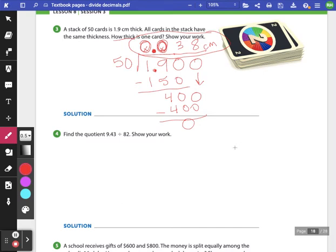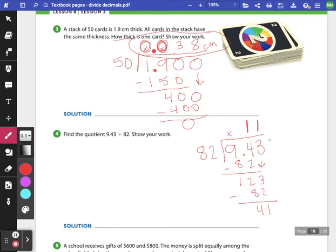Number 4, find the quotient of 9.43 divided by 82. I know that 82 cannot go into 9. It can go into 94 one time. So I would have 12 left over. Bring down my 3. I know that 82 can go into 123 only one time, which is 41 left. I can't say remainder 41, so I'm going to add a 0 and continue working. And 82 goes into 410 exactly 5 times. Now I forgot my decimal, so I'm going to bring that straight up in my answer. I don't have any decimals on the outside. I only have one on the inside, so it goes straight up in my answer. And I'm going to change my placeholder to a 0 so that my answer looks better. 0.115.